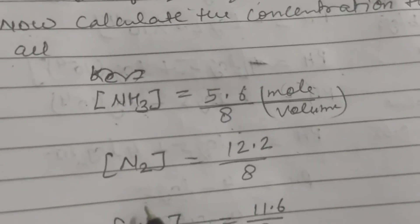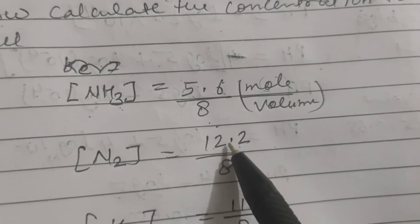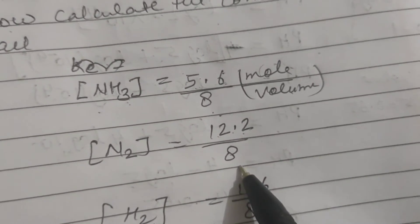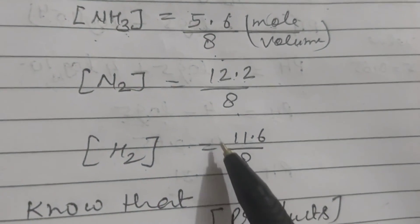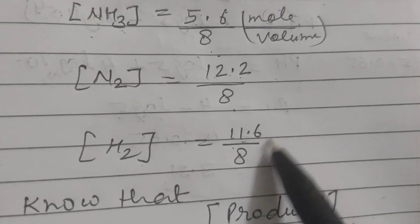For nitrogen it will be 12.2, the number of moles at equilibrium upon volume. And for hydrogen, the number of moles is 11.6 upon 8.